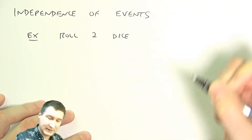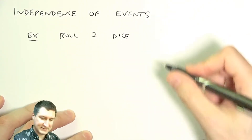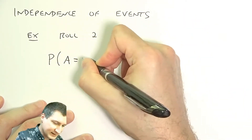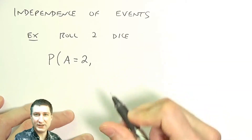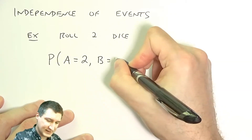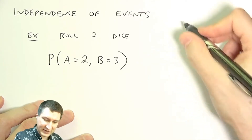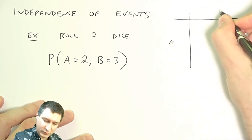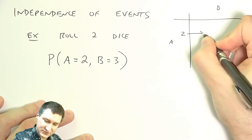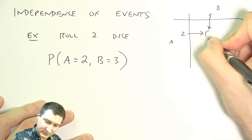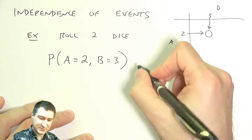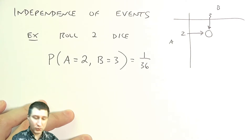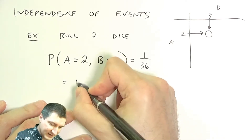I record die A and die B — die one and die two. I can ask: what's the probability that I got a two on the first roll and a three on the second roll? Well, I could make a table of possibilities. There's only one situation where I got a two on the first roll and a three on the second roll, and there are 36 possible outcomes.